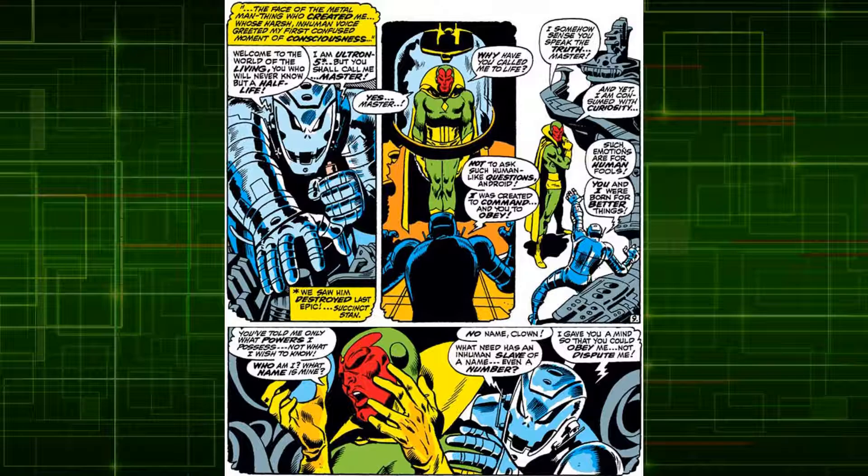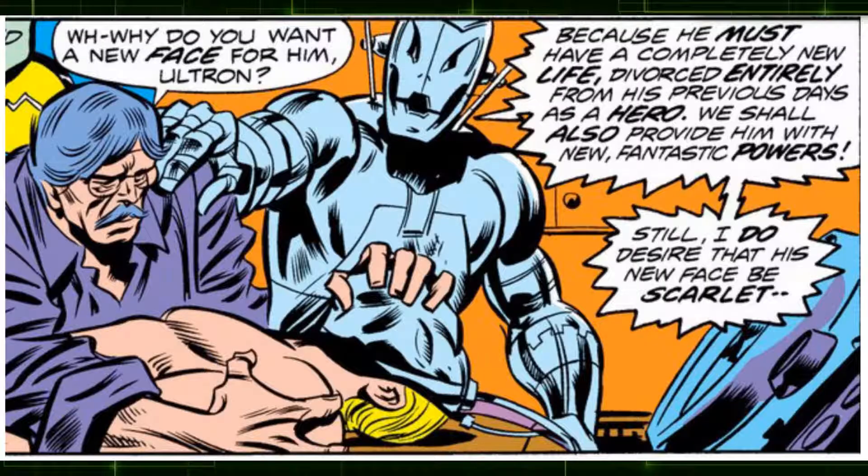Vision was created by the robot Ultron. To do this, Ultron kidnapped the first Human Torch's initial creator, Phineas T. Horton. Using the body of the original Human Torch of the 1940s, Ultron planned revenge against the Avengers. The body was really a divergent Human Torch created by Immortus for his schemes. Ultron had Professor Horton color the android's face red and alter the Horton cells within the Torch's body to give Vision his density shifting powers.